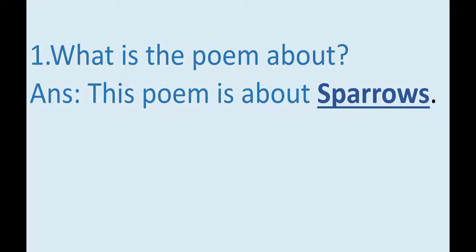Now we will go through the question and answer. What is the poem about? This poem is about sparrows — S-P-A-R-R-O-W-S. Just now we read the poem, children. It is all about sparrows. The poet was looking at sparrows here and there — he found them on the mango tree, grass, windowsill, gravel path, garden chair, and by the lily pool. He finds sparrows everywhere. So the correct answer is: this poem is about sparrows.